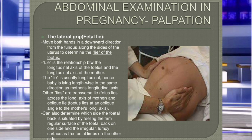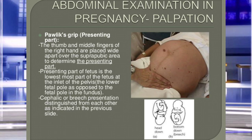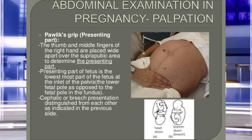The third maneuver is the pawlik's grip, also known as the first pelvic grip. Place the thumb and middle fingers of the right hand wide apart over the suprapubic area to determine the presenting part — that is, which part of the baby will come out first. If a hard mass is felt, it indicates the head (cephalic presentation). If a soft mass is felt, it indicates the buttocks or breech presentation.